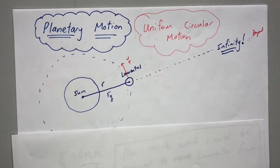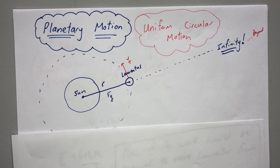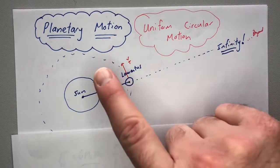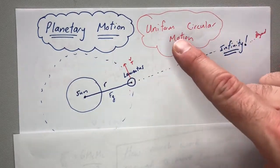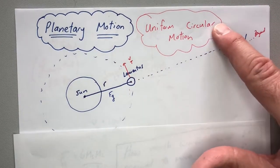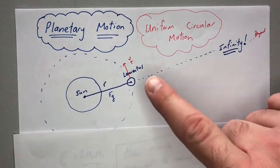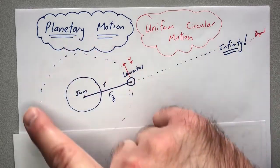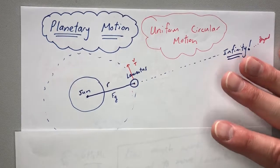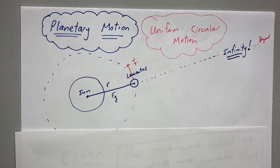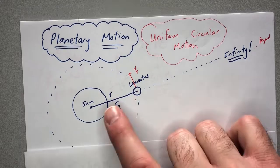We're going to do something pretty challenging today. It's the last thing we're going to talk about in Uniform Circular Motion. We're going to talk about planetary motion, and more specifically, we're going to treat it like a circle. Planets don't travel in perfect circles, but we can assume they're very close to a circle. So unless they say it's traveling in an ellipse, you can't use this tool.